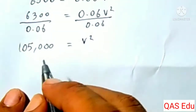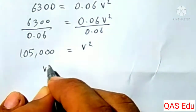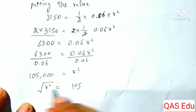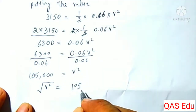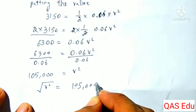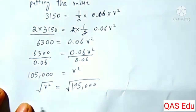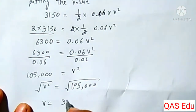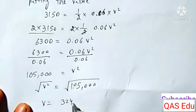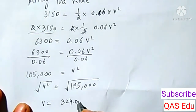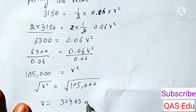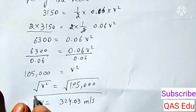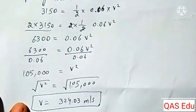v² equals some value, and taking the square root gives v approximately equal to 324.03 meters per second. That is the result.